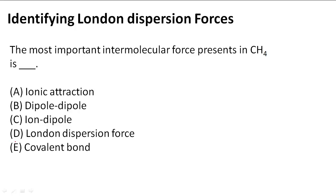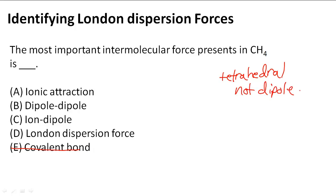We know it can't be E because that's an intramolecular force, but we have four options here. CH₄ is tetrahedral in shape and is not really a dipole. So it's not a dipole, it's not an ion, and it doesn't have ionic attraction. And when CH₄ interacts with other molecules, a dipole is also not present.